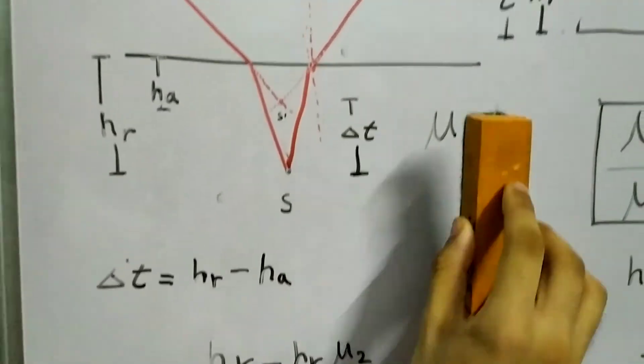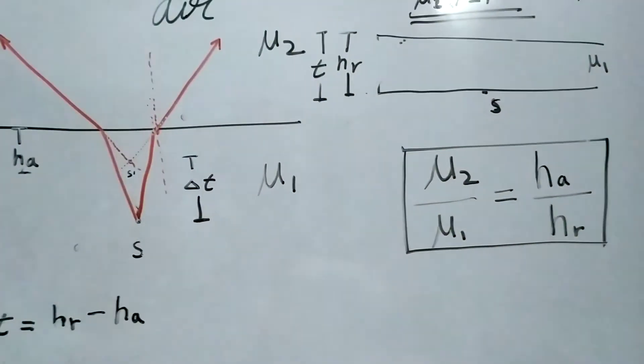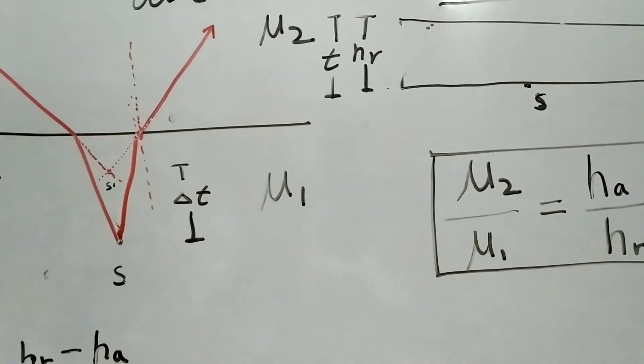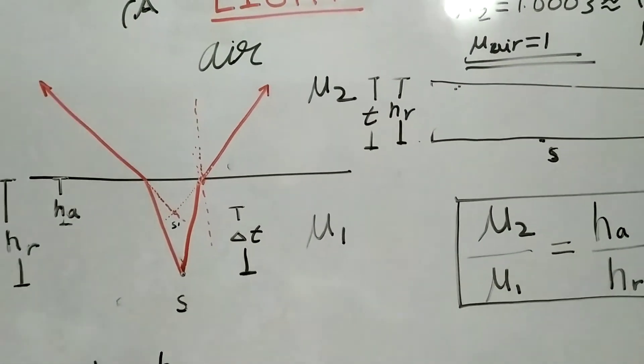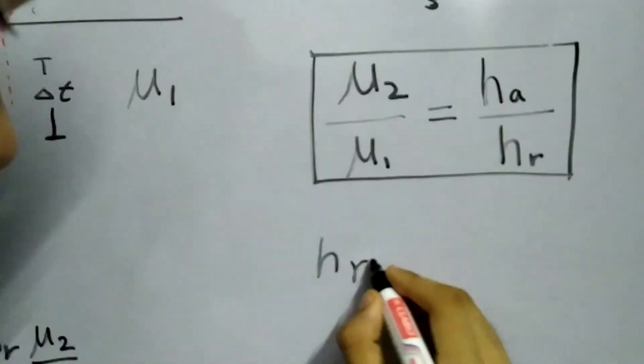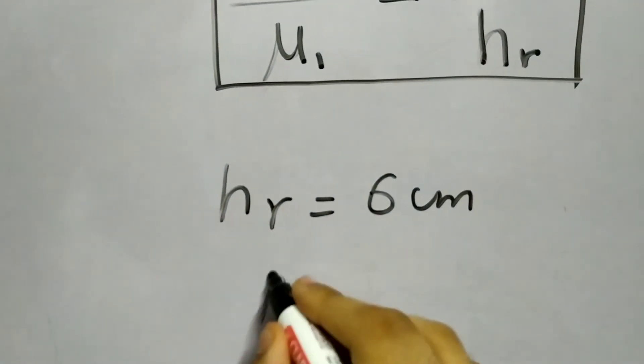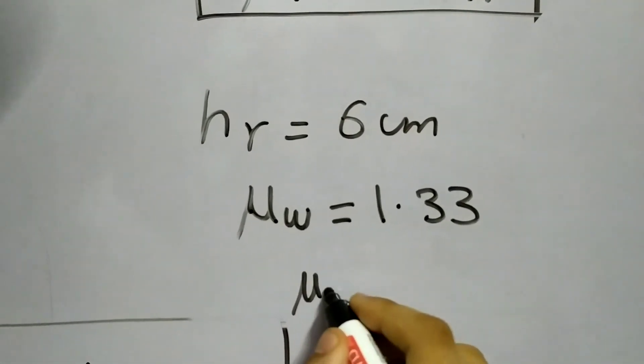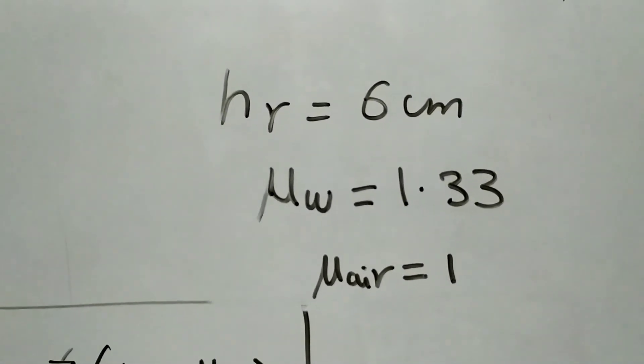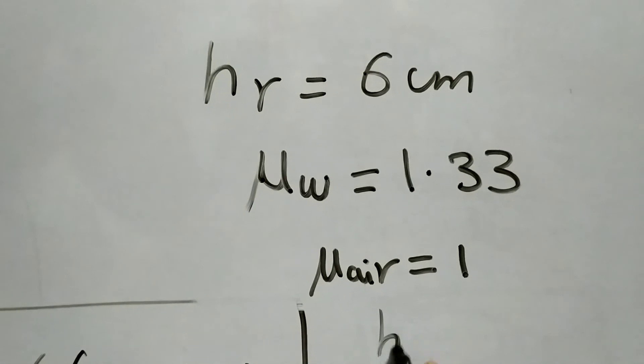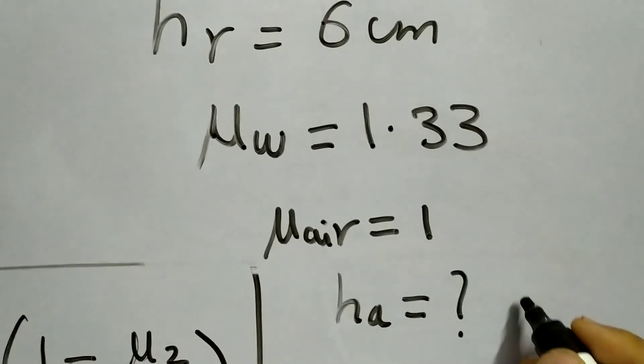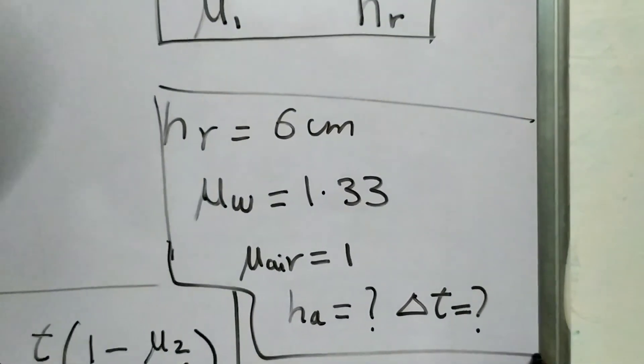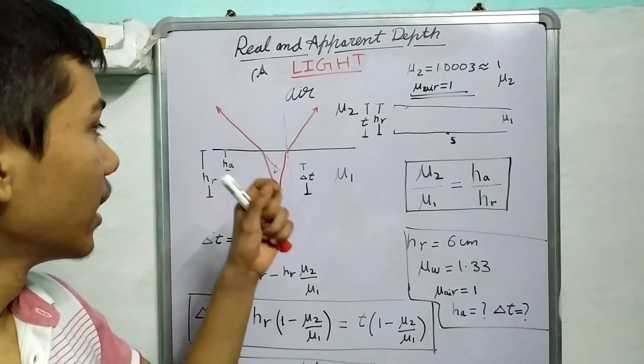So as a quick question, let me give you a quick numerical, very easy numerical. So in an experiment, the thickness or the depth, the actual depth of the coin was, let's say around six centimeters. So it was six centimeters. And the refractive index of water is again 1.33. We need to consider the refractive index of air as one. And the question for you is, what is, what was the apparent depth that we saw? And how much the image shifted? So thanks for watching and I really hope you liked this content.